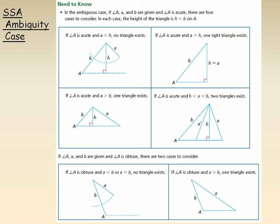This is a screen capture from the textbook. In the ambiguous case, you're given an angle, the side opposite it, and another side. There are four different cases to consider if angle A is acute. Here's angle A, side B, and the side opposite this angle. Now, H represents the perpendicular distance — the height of the triangle, not the hypotenuse. To calculate that height, I use the sine ratio, since H is the opposite side and B is the hypotenuse.